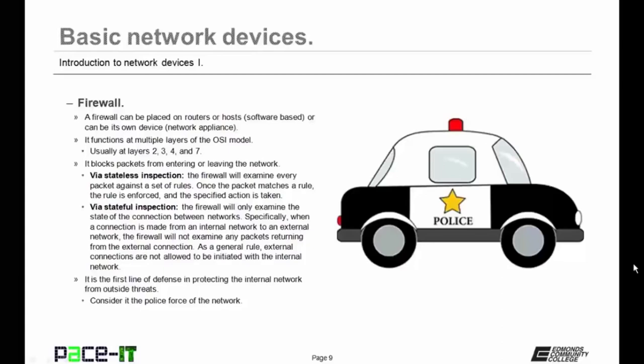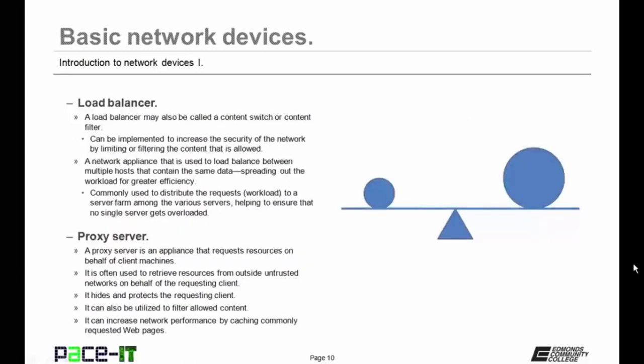A firewall that uses stateful inspection will only allow connections to be made from inside to outside; it will not allow that outside entity to initiate a connection with an inside host. Firewalls are usually the first line of defense in protecting the internal network from outside threats. You can consider the firewall as the police force of the network. Then we have load balancers.